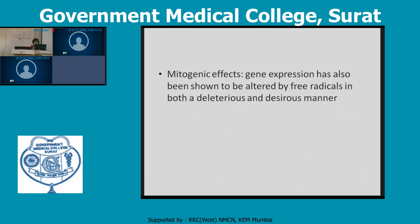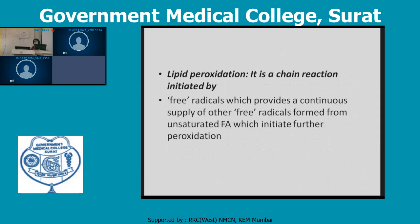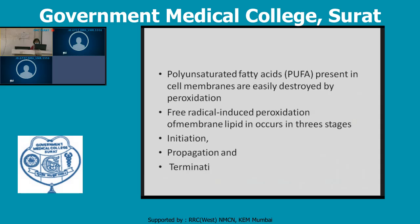Lipid peroxidation is a chain reaction formed by free radicals. Free radicals formed from unsaturated fatty acids initiate further peroxidation. Polyunsaturated fatty acids present in the cell membrane are easily destroyed by peroxidation. This free radical-induced peroxidation of membrane occurs in three phases: initiation, propagation, and termination.